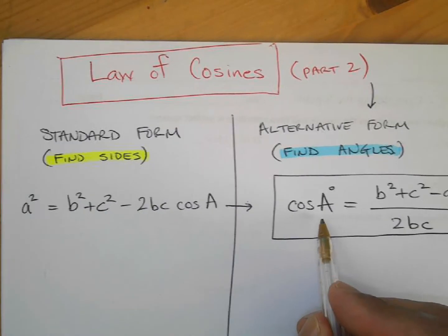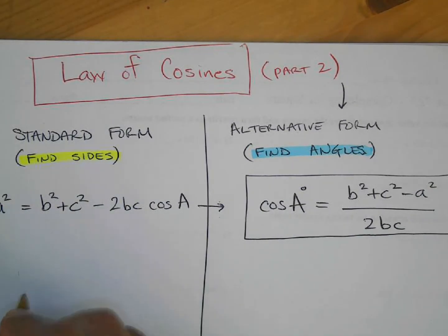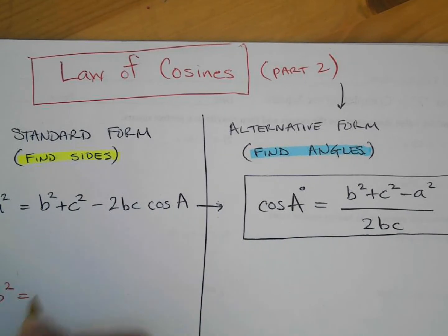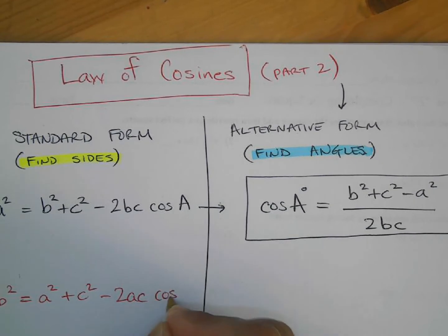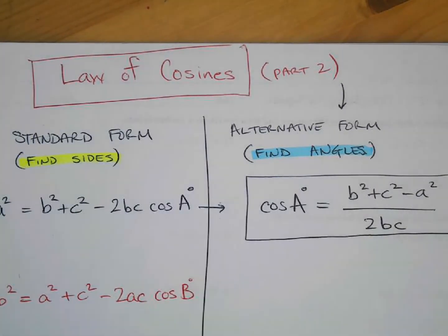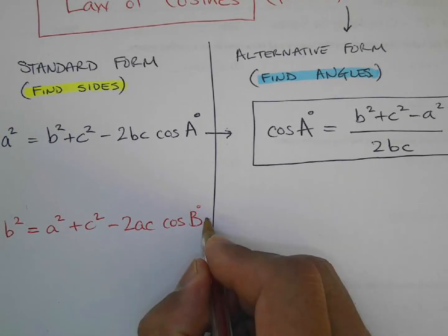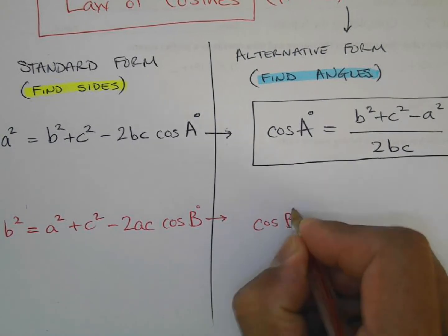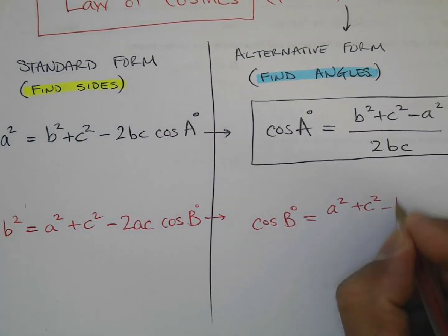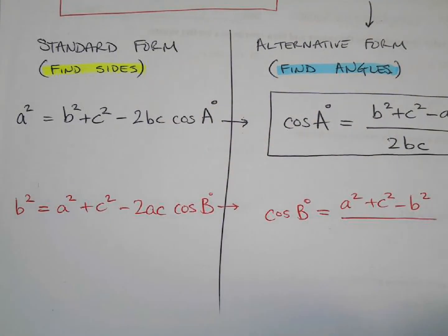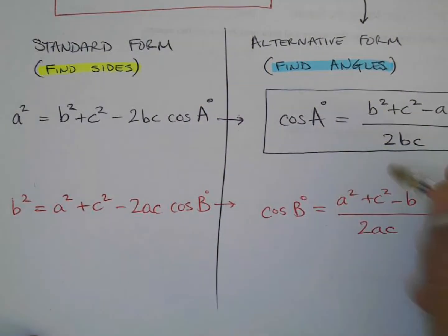The same thing is true for angle B. Remember, b² = a² + c² − 2ac·cosB. Solving that for cosine B gives you: cosB = (a² + c² − b²) / (2ac). That's the formula to find angle B.